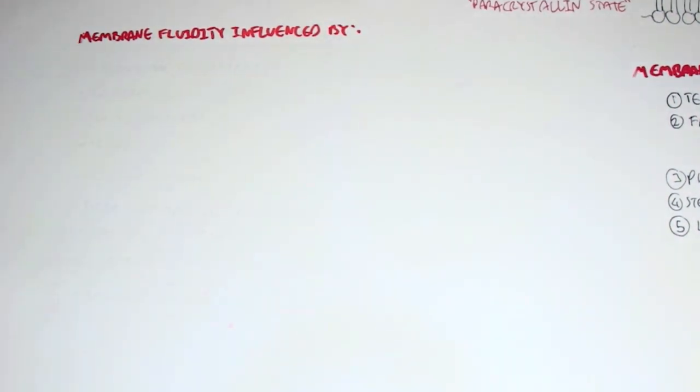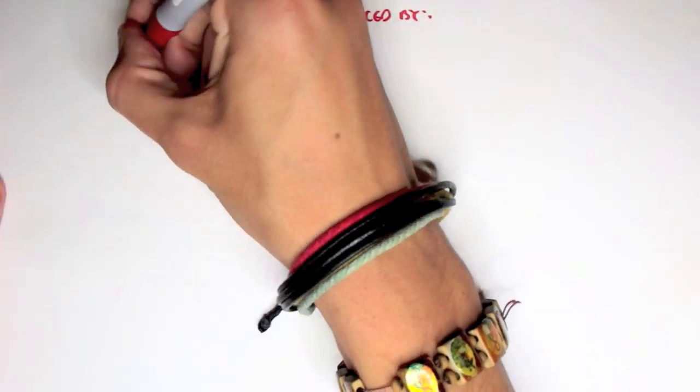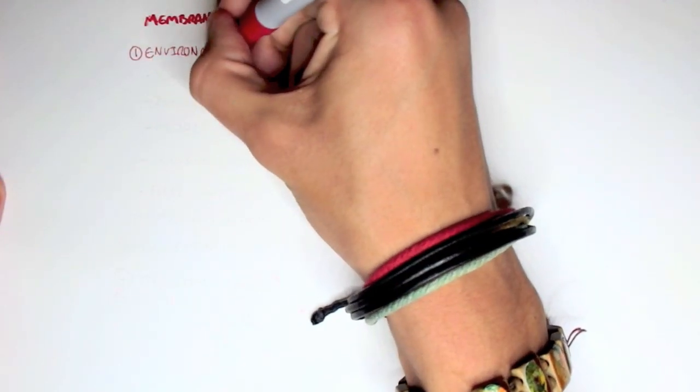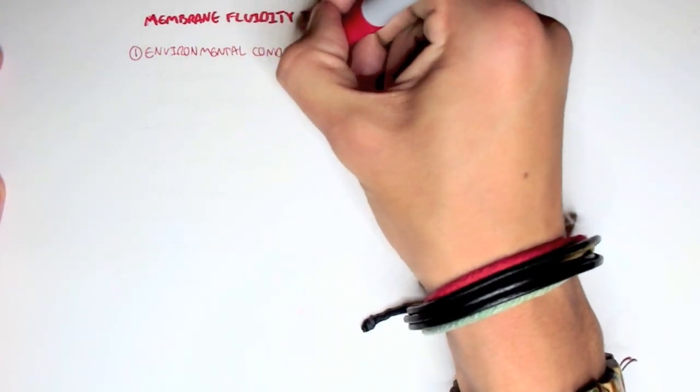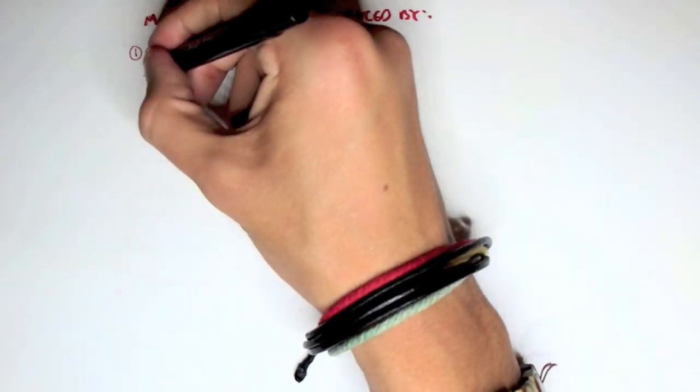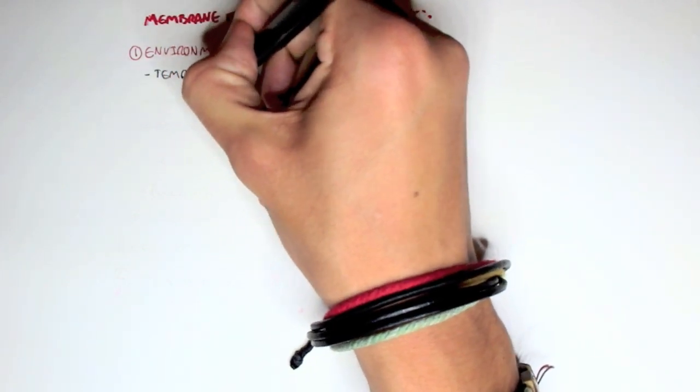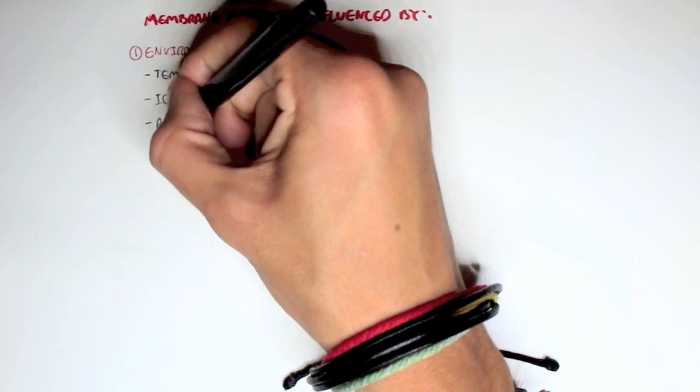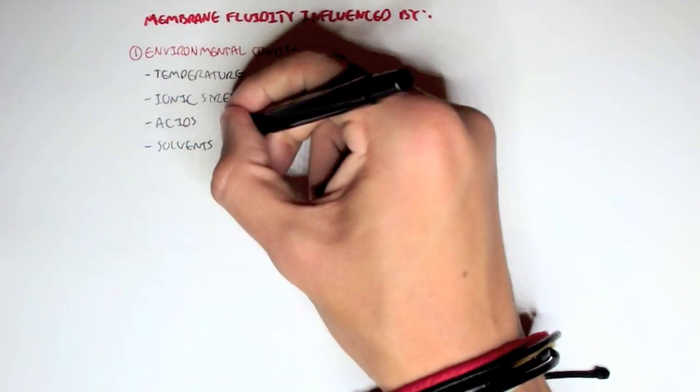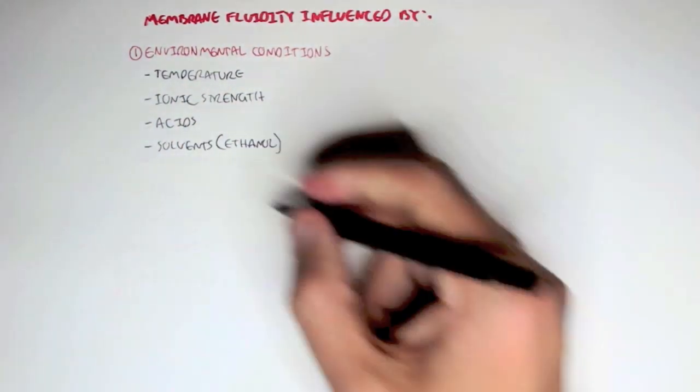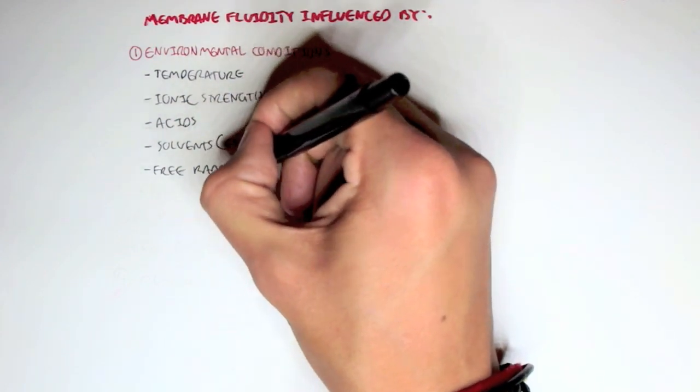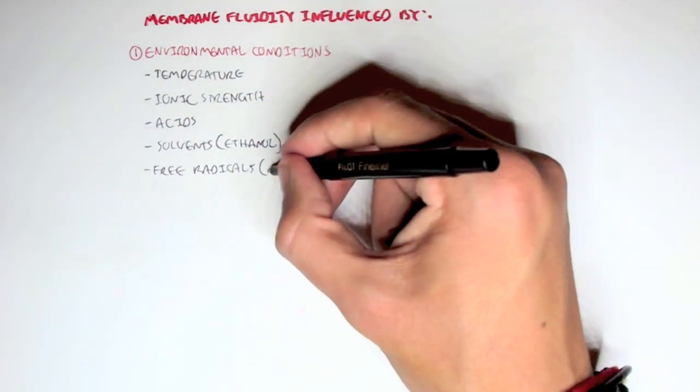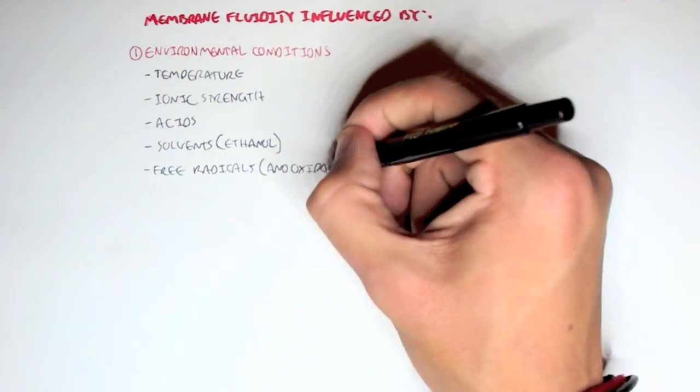Now let's talk more about the membrane fluidity and what it's influenced by and look at other factors such as environmental conditions. And as mentioned before, temperature plays a vital role in the environment. And we also have the ionic strength within the area, whether there's a lot of ions around. The acidity. If there's solvents present, such as ethanol, and if there's free radicals and oxidants which can potentially damage the membrane.